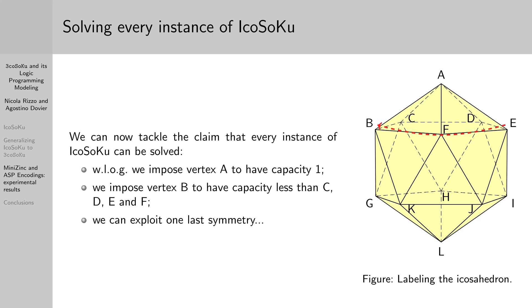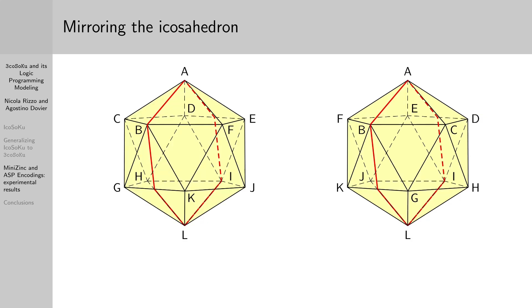We can exploit one last symmetry of the game that has to do with both the icosahedron and the tile configuration. In fact, we can reflect the icosahedron with the plane that goes through vertices A, B, and L. Another way of seeing this is imagining to play Icosoku in a mirror. But if each instance corresponds to a mirrored one, and vice versa, does a mirrored solution correspond to a solution of Icosoku? Is the game we are playing in the mirror still Icosoku or just a specular version?